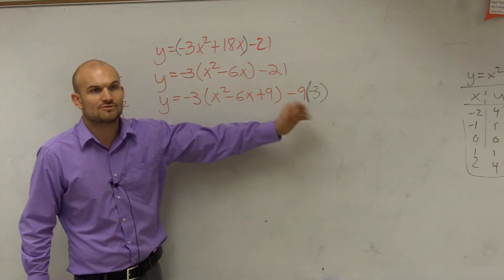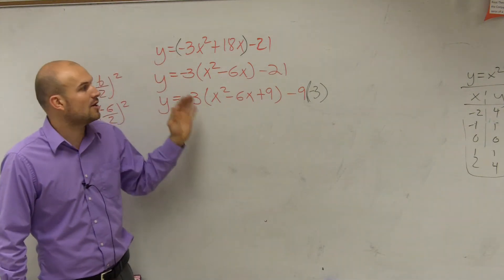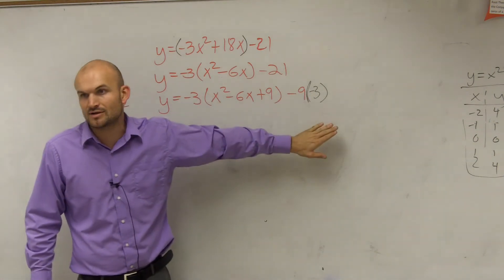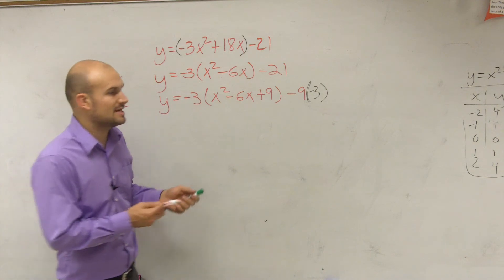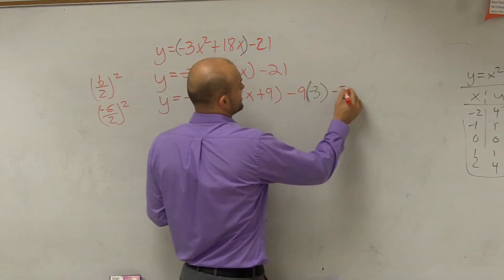So whatever you add and subtract, remember, if you factor something out, you've got to multiply that back outside your parentheses. So now I have minus 9 times 3 and then minus 21.